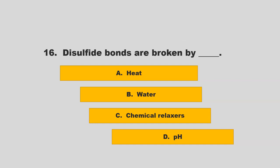Disulfide bonds are broken by blank. Is it heat, water, chemical relaxers, or pH? If you chose C, chemical relaxers, you are correct.